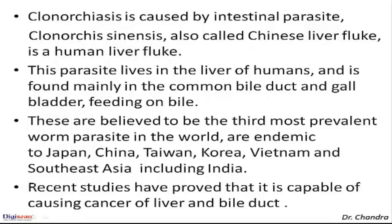Clonorchis sinensis is also called the Chinese liver fluke and is a human liver fluke. This parasite lives in the liver of humans and is found mainly in the common bile duct and gallbladder, where it feeds on bile. It is believed to be the third most prevalent worm parasite in the world and is endemic to Japan, China, Taiwan, Korea, Vietnam, and Southeast Asia including India. Recent studies have proved it is capable of causing cancer of the liver and bile duct.